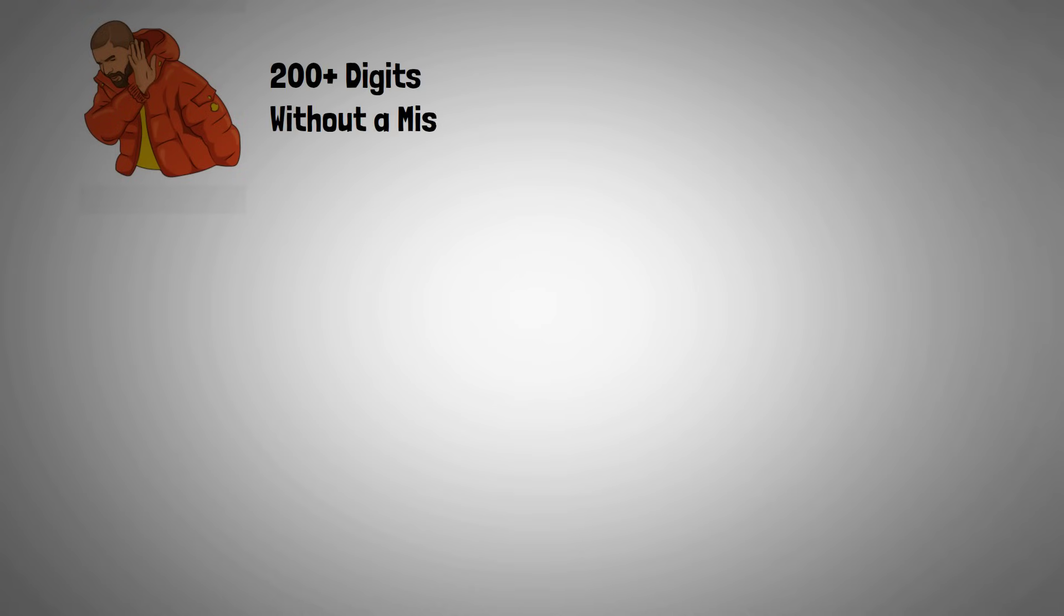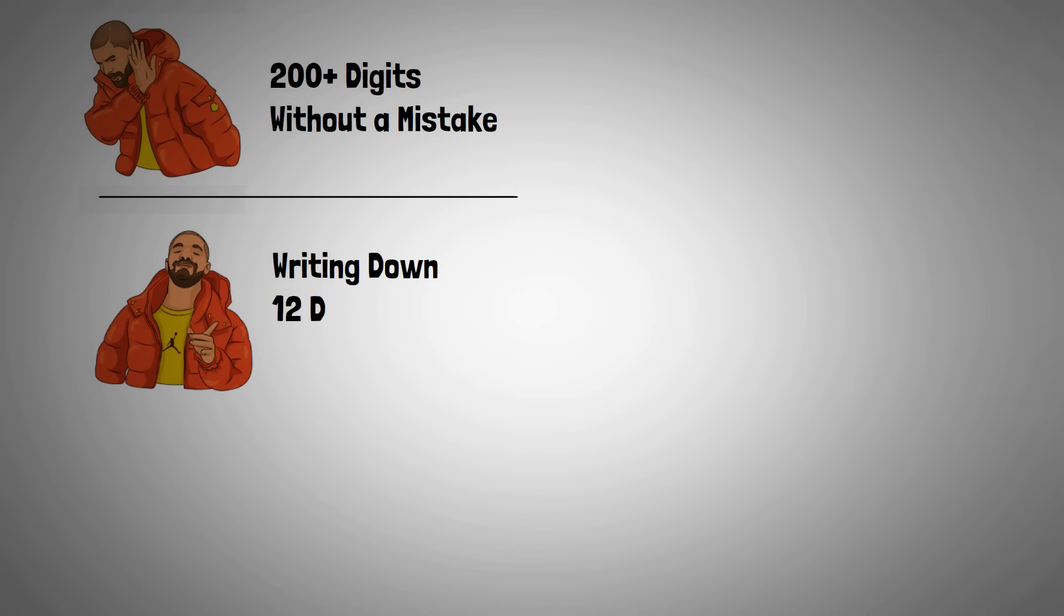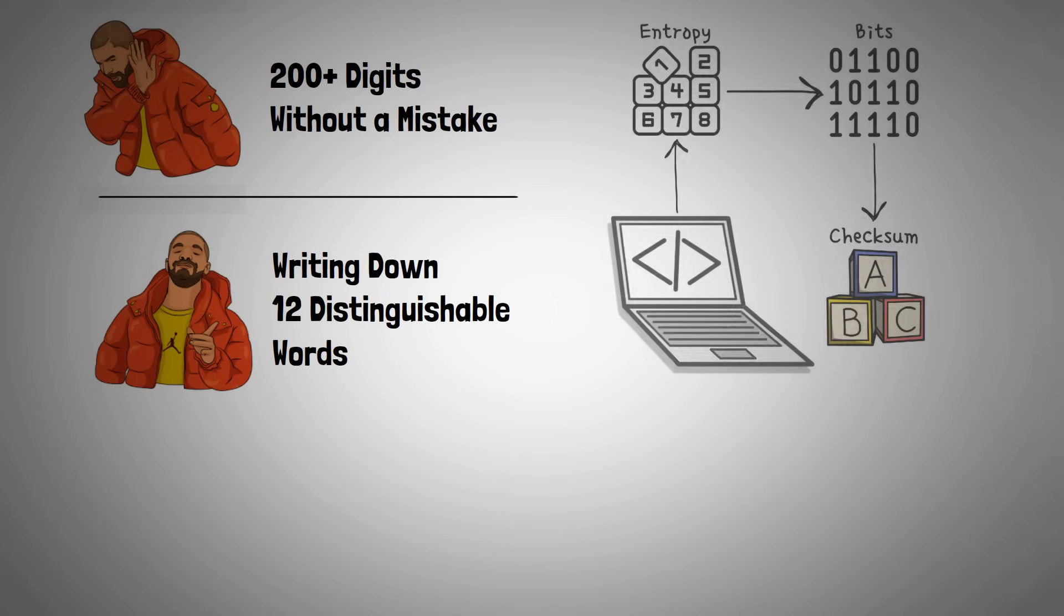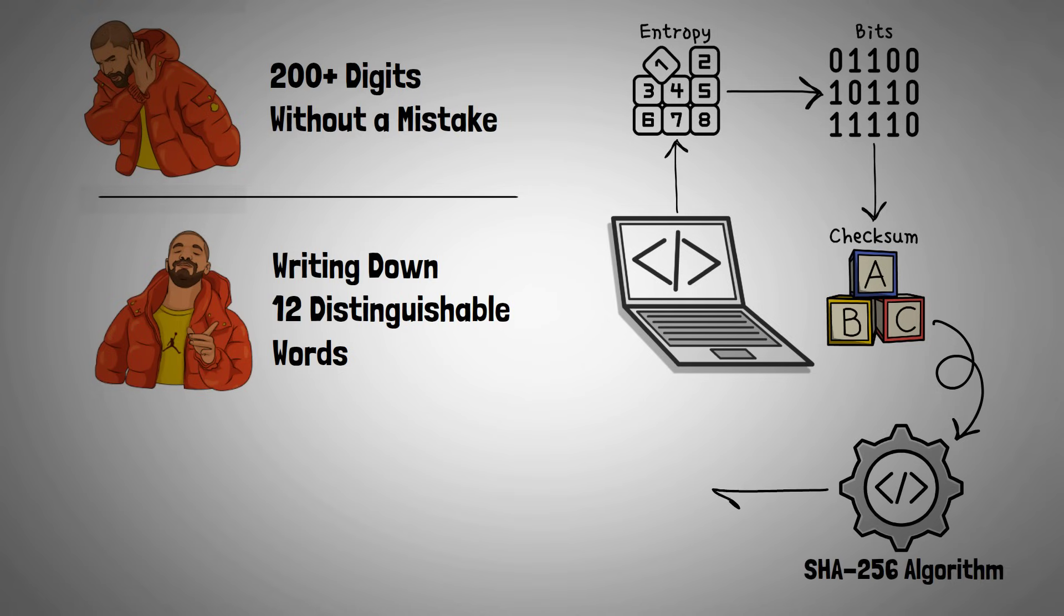Imagine having to write down 200 or more digits without a single mistake. Writing down 12 distinguishable words is much easier, safer, and less error-prone. If you put the same mnemonic phrase into the SHA-256 algorithm, you'll get the same seed out.